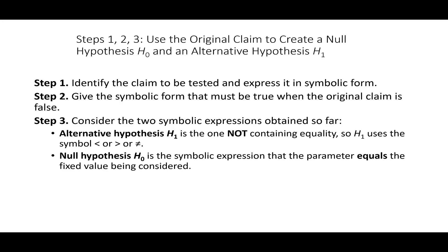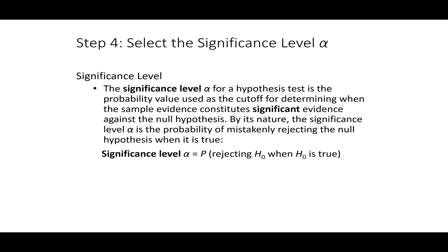Step one: identify the claim to be tested and express it in symbolic form. Step two: give the symbolic form that must be true when the original claim is false. Step three: introduce your null hypothesis and alternate hypothesis. Step four: look at your significance level — the alpha value is the same we used in chapter 7, depending on what confidence level you want.